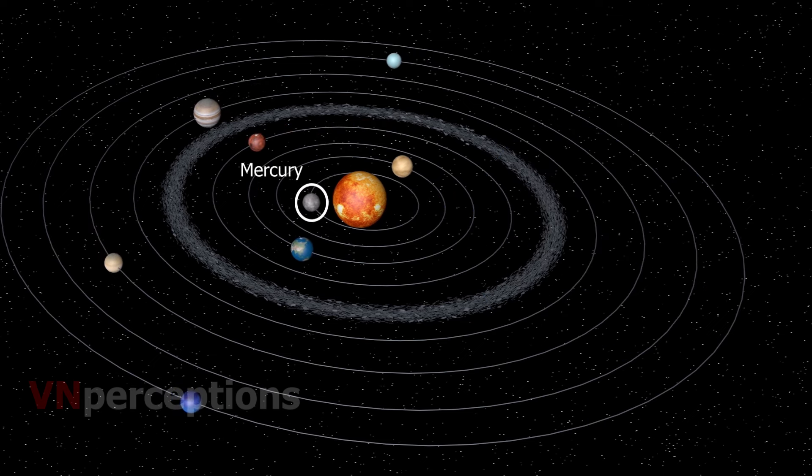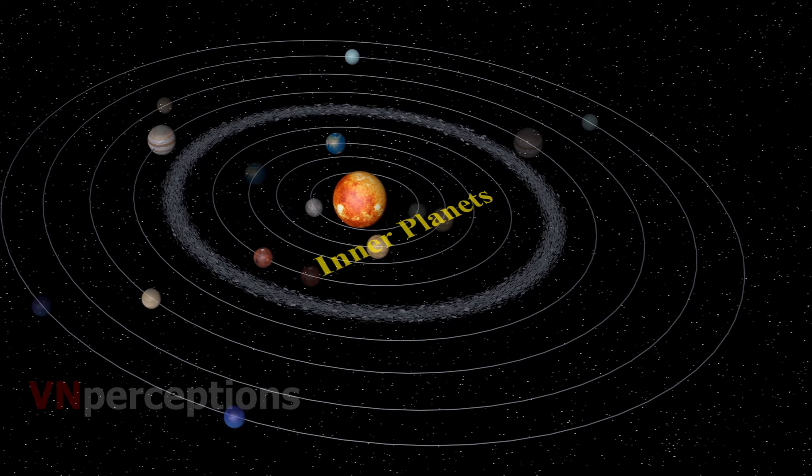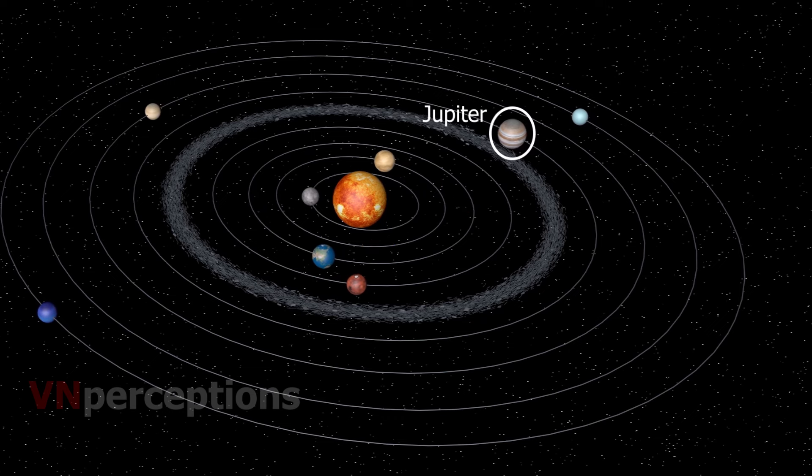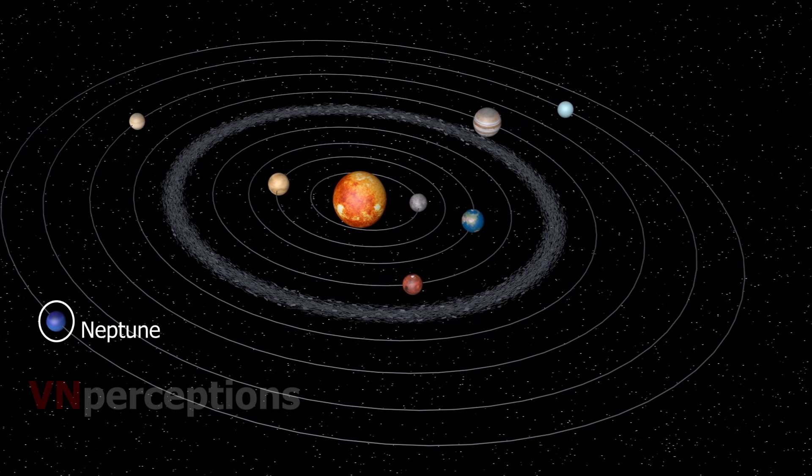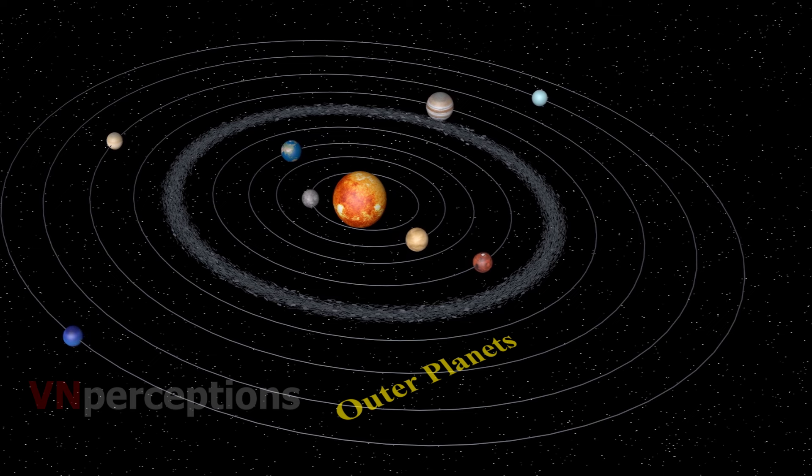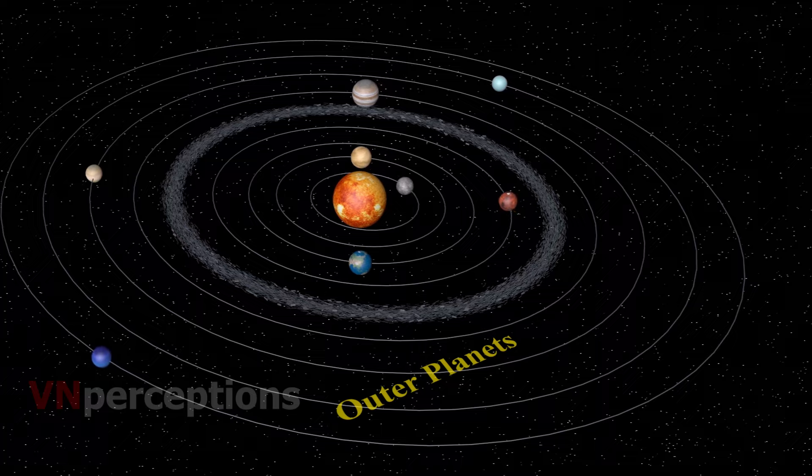The first four planets, that is Mercury, Venus, Earth and Mars are much nearer to the Sun than the other four planets. They are called the inner planets. The inner planets have very few moons. The planets outside the orbit of Mars, that is Jupiter, Saturn, Uranus, Neptune are much further off than the inner planets. They are called the outer planets and they have a ring system around them. The outer planets have large number of moons.